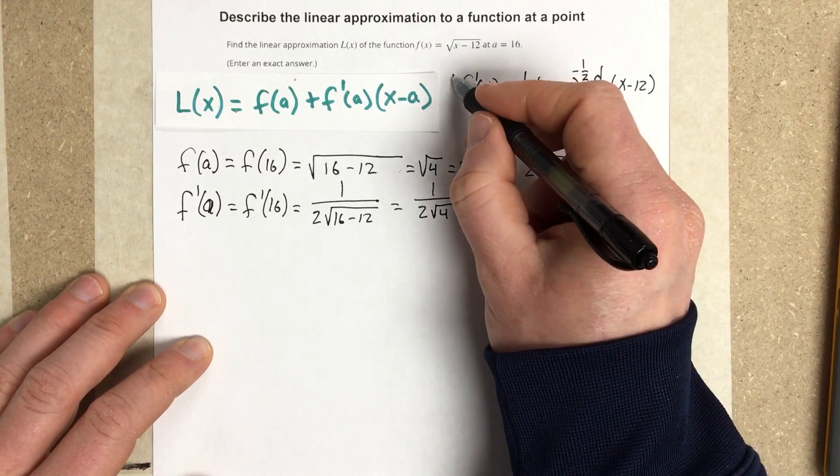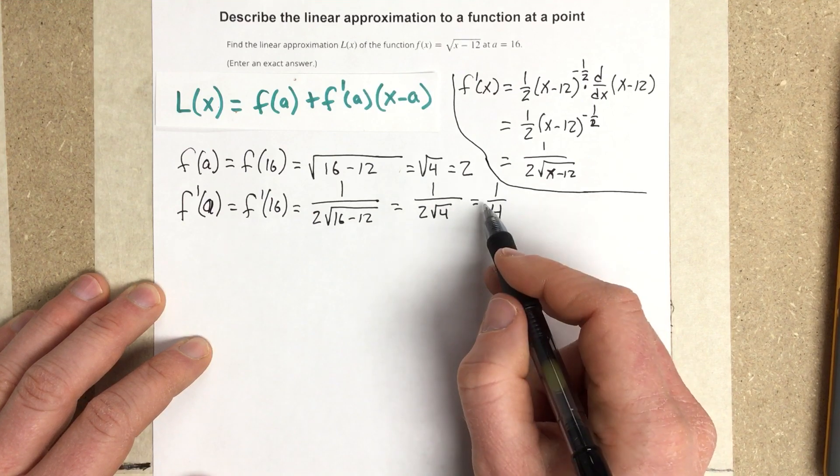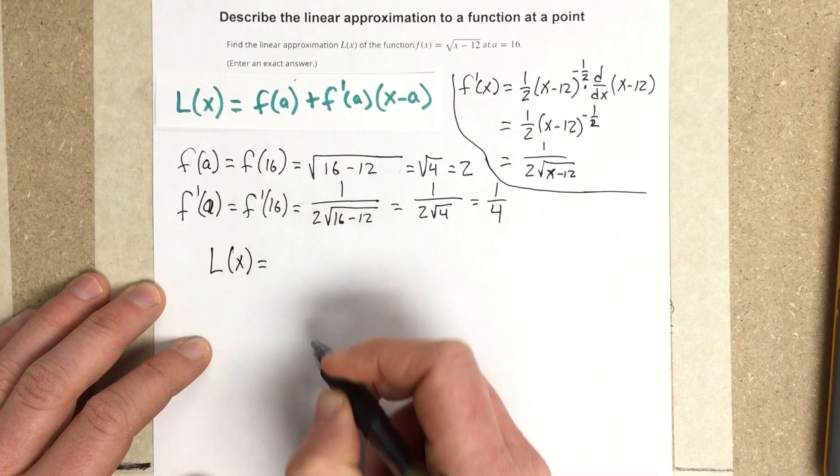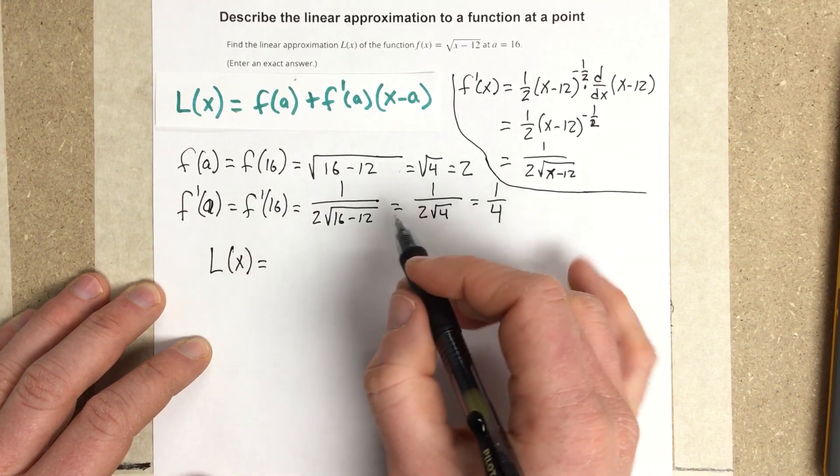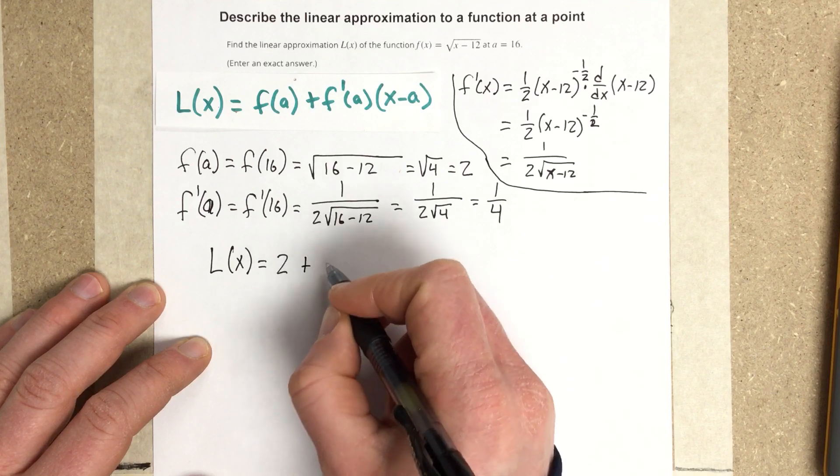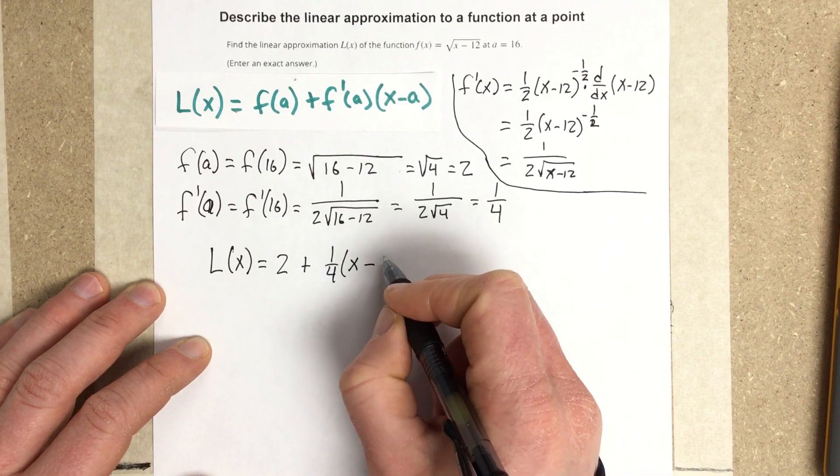So then I'm going to kind of box this off a little bit. So then I can take these two values, plug them into our linearization equation. And that's going to equal f of a, which is 2, plus f prime of a, which was 1 fourth, times x minus a, which is 16.